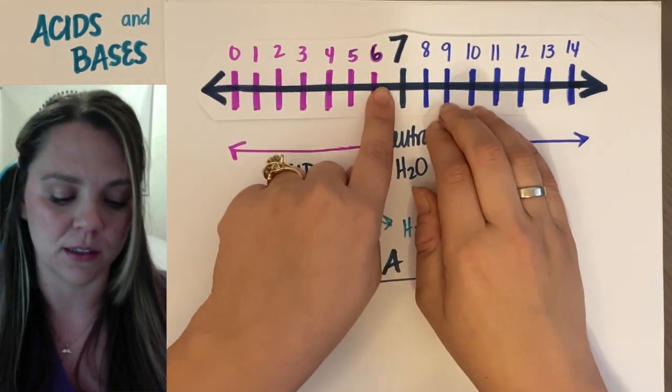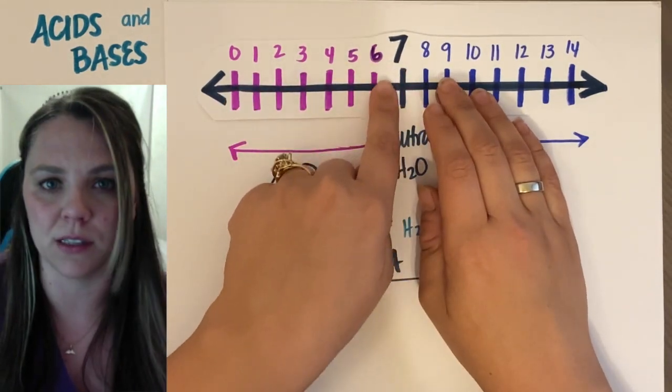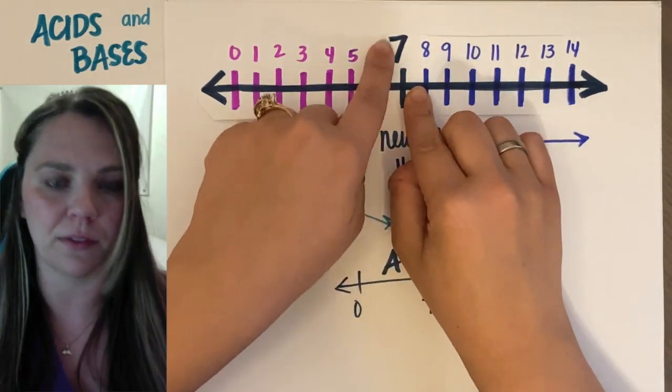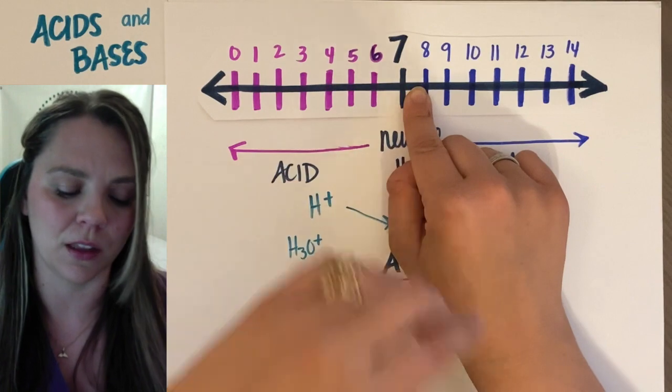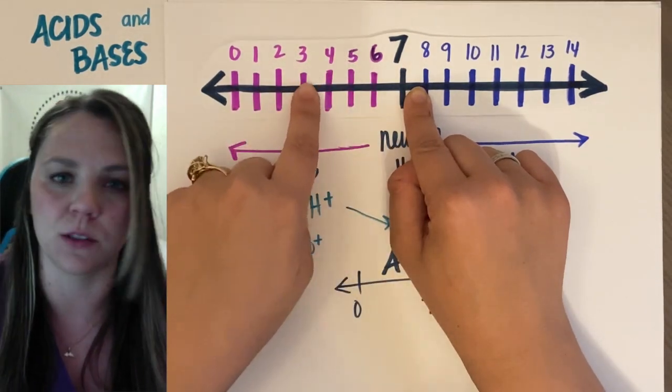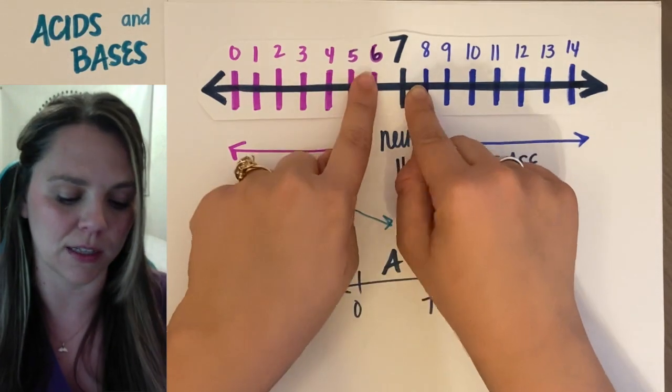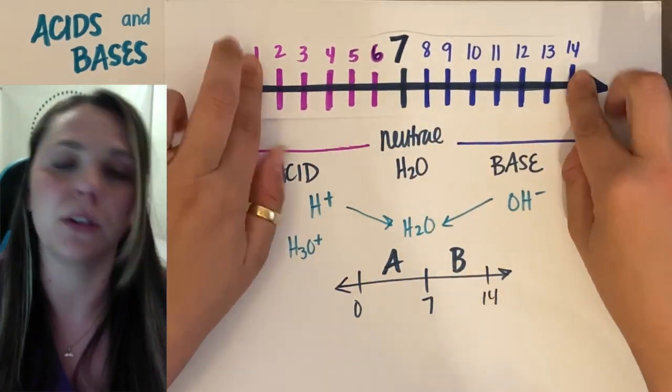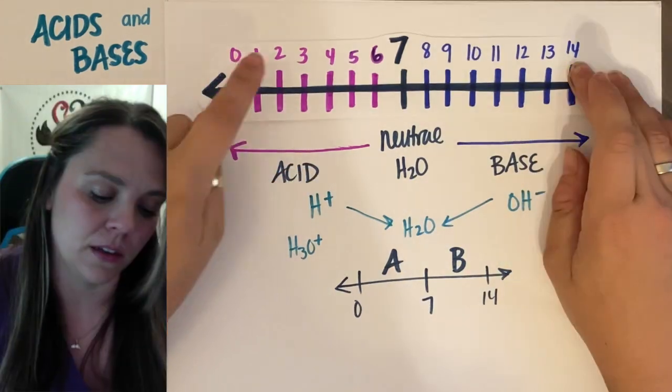So citric acid, milk is not a pure pH of 7. Coffee is like a 6 or something. I think pure rainwater is like a 5. It's more acidic. You have acid rain that's even further down. We'll look at a sliding scale. But the further out you get towards the ends, that's when you're getting to stuff that's dangerous.